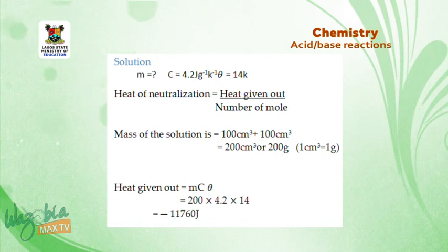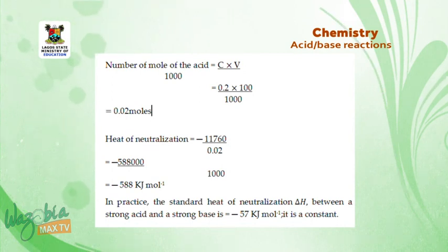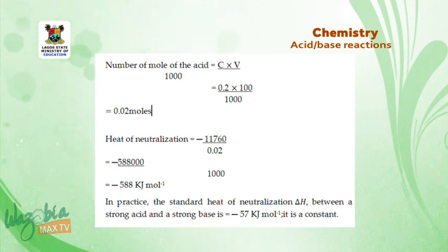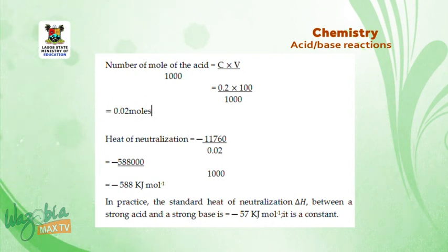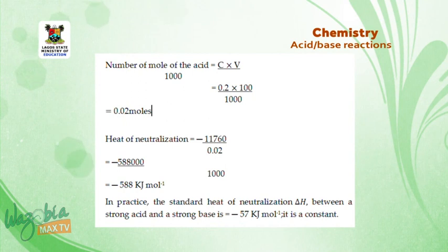Don't forget that anytime heat is given out, the enthalpy bears a negative sign. To find the number of moles of the acid, we use concentration × volume ÷ 1000. Concentration of HCl is 0.2 × 100 ÷ 1000 = 0.02 moles. Therefore, heat of neutralization = −11,760 J ÷ 0.02 = −588,000 J. Converting to kilojoules gives −588 kJ/mol.